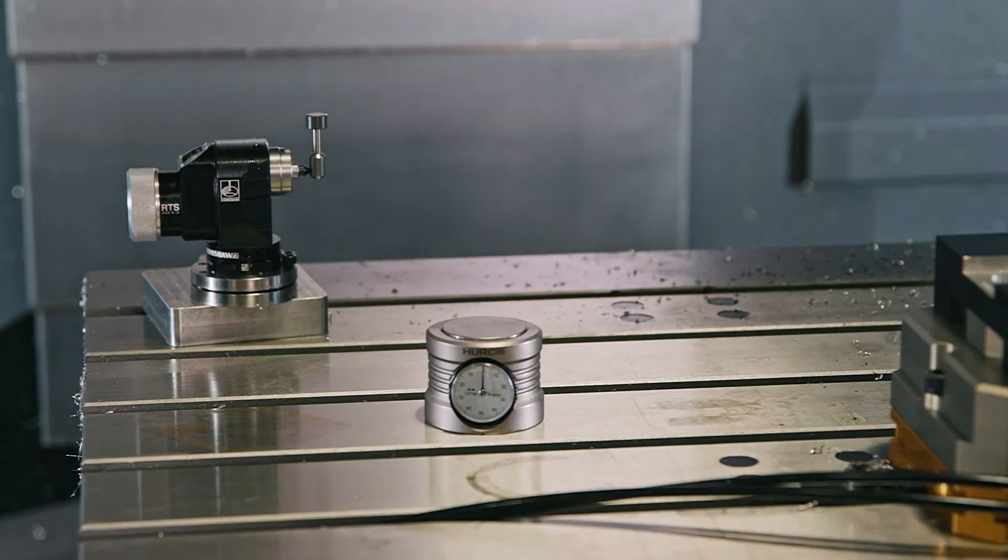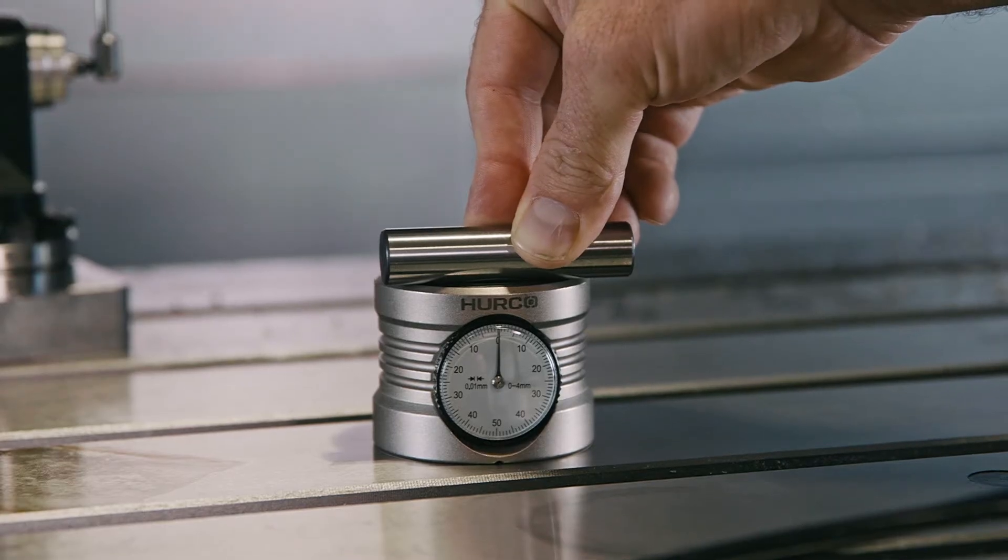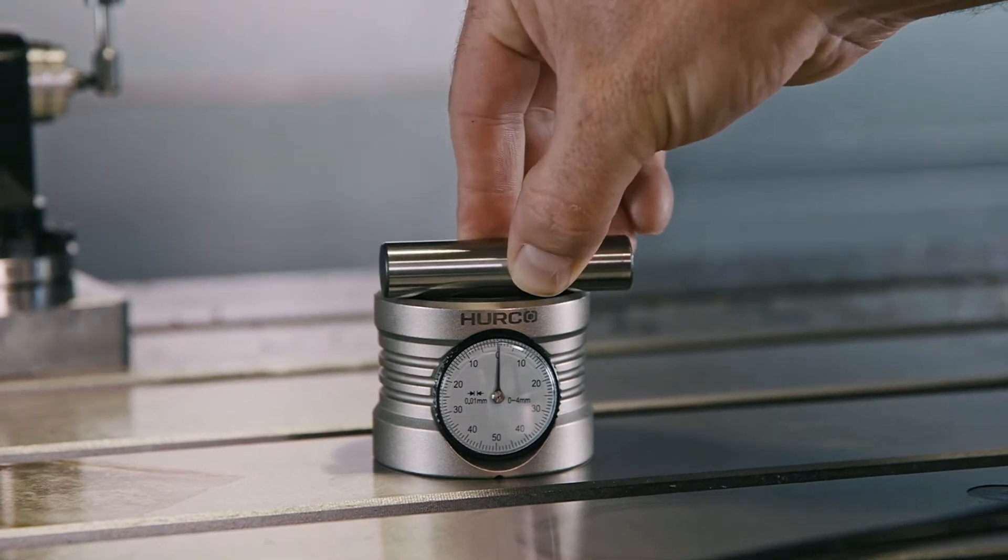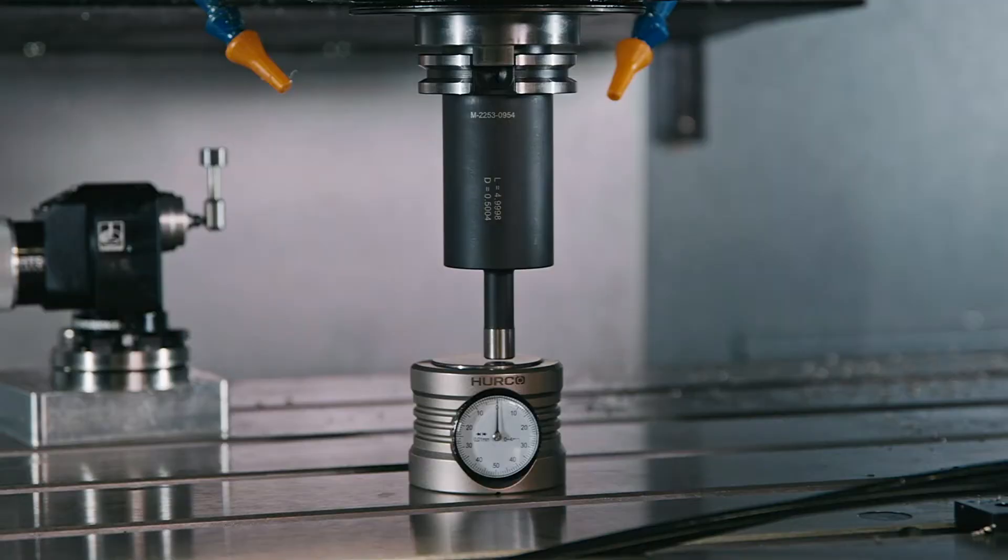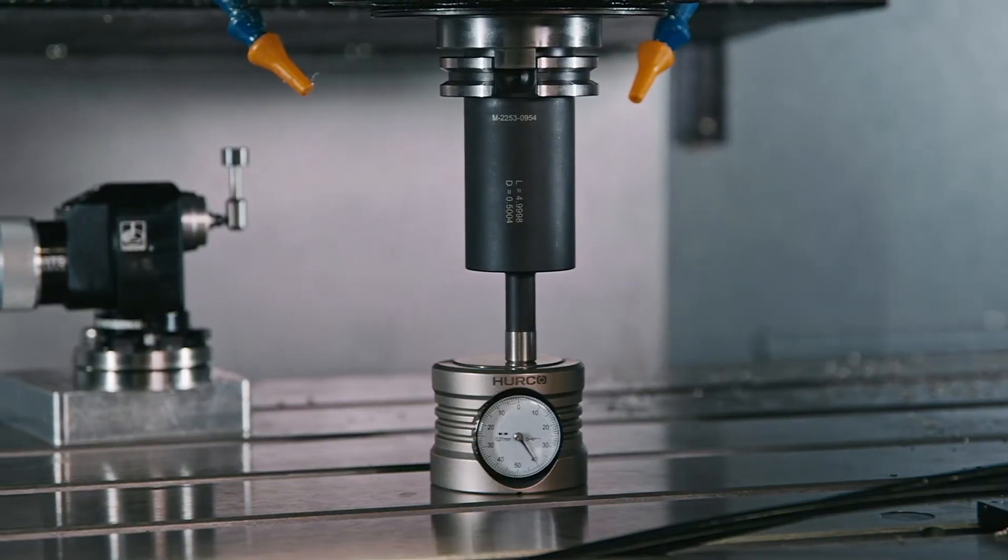Place your toolsetter and use a gauge pin to make sure the dial is zeroed. Insert your master reference tool and jog it down to the toolsetter. Keep jogging until the gauge reads zero.